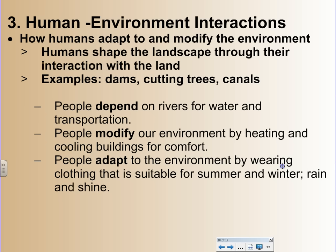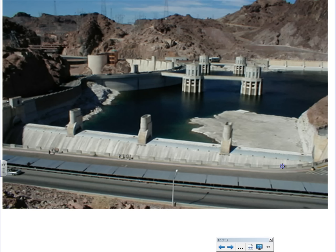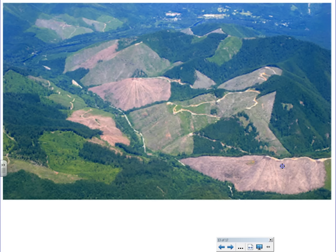The third theme is human-environment interaction — how do humans adapt and modify their environment? Humans shape the landscape through their interaction with the land. Examples include building dams, cutting down trees, and building canals. People depend on rivers for water and transportation. People modify their environment by heating and cooling buildings for comfort, and adapt by wearing clothing suitable to summer, winter, rain, and shine. All places on earth have advantages and disadvantages for human settlement — one person's advantage may be another's disadvantage. Some like the excitement of large cities, whereas others prefer remoteness. Environment is not just trees, spotted owls, and rainforests — environment is a feeling. For example, in the Sudan, even though everything is seemingly barren, the land sustains farmers and nomadic herders, and peoples and animals have adapted to the hot, dry climate of Africa.